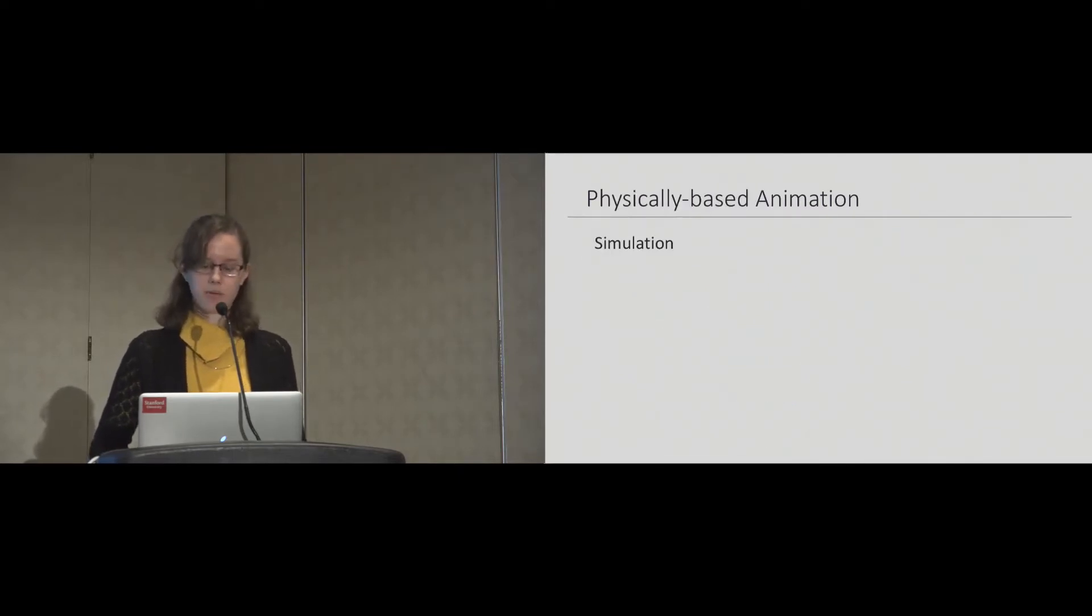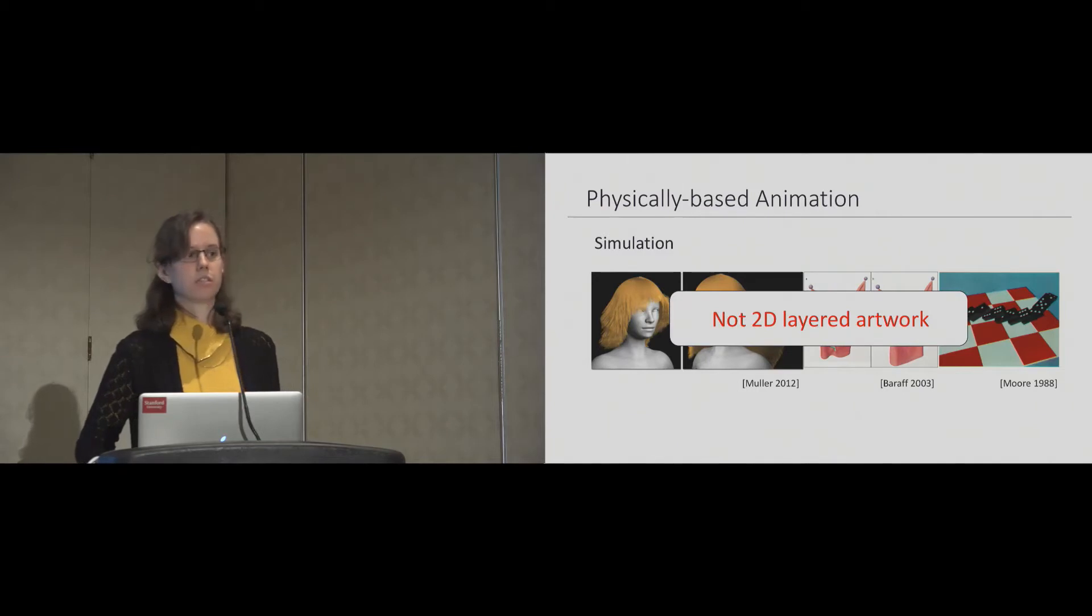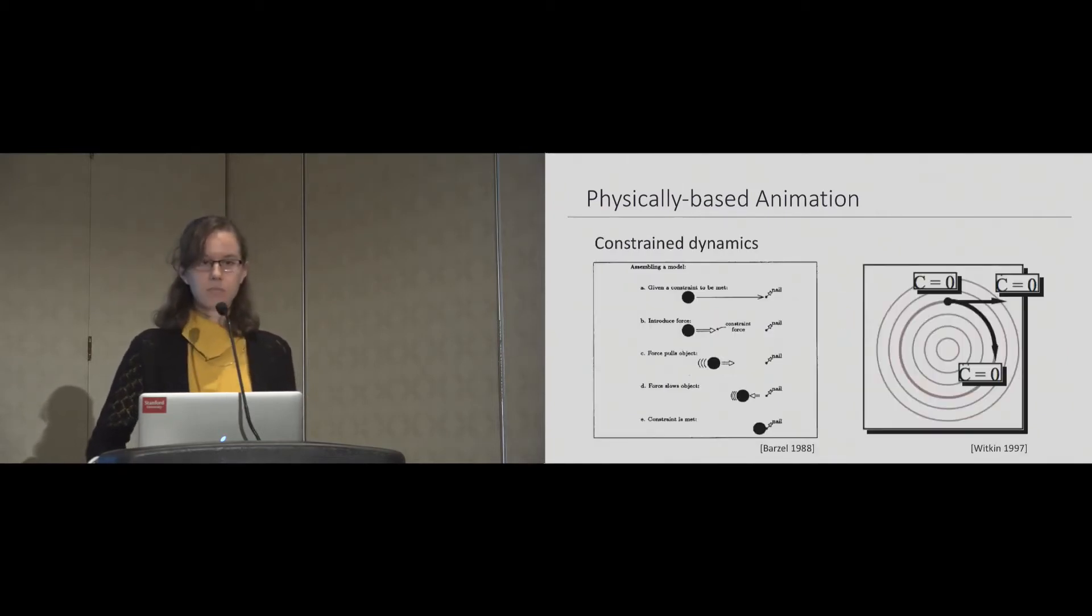In offline or keyframe animation software, simulation is a go-to method for automatic secondary animation of hair, cloth, and collisions. Simulations assume full knowledge of the system, including geometry and other properties. This requirement makes it difficult to apply simulation to a layered composition of 2D artwork. Building on the findings in these papers, we base our approach within a constrained dynamics formulation, which gives us a general-purpose mechanism for delivering plausible secondary effects that also track performance-induced constraints.